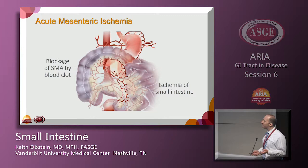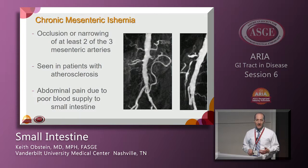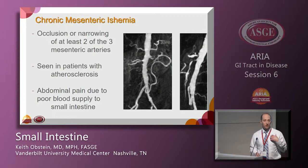Chronic mesenteric ischemia results from slow narrowing of vessels due to atherosclerotic plaques or other stenosis. These patients have postprandial pain — intestinal angina — because increased blood demand after eating cannot be met. They develop fear of eating and progressive weight loss. You usually need more than one major vessel affected before symptoms occur due to collateral flow.